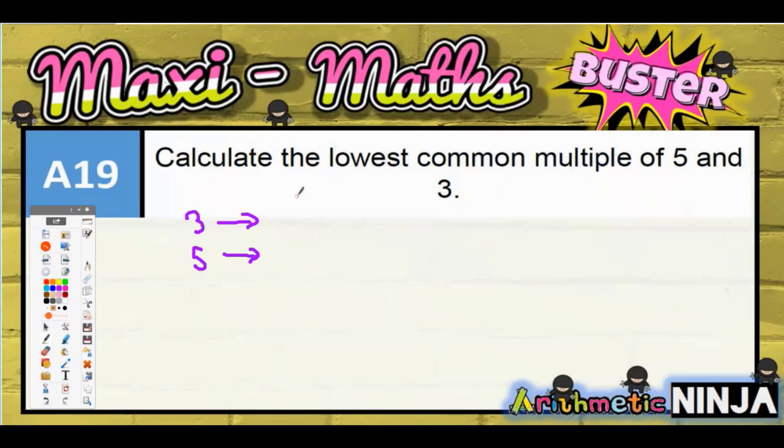So multiples of 3 is the three times table: 3, 6, 9, 12, 15, 18... You could keep going, obviously, and sometimes you might need to keep going if you can't find a number that's common in both lists. You might need to extend the list until you do find a number that appears in both lists.